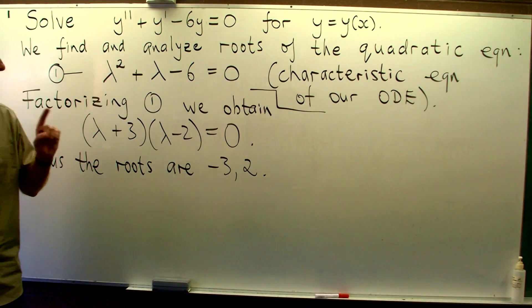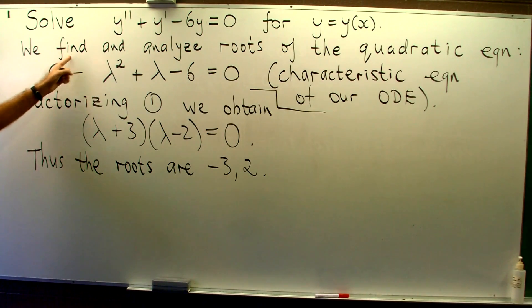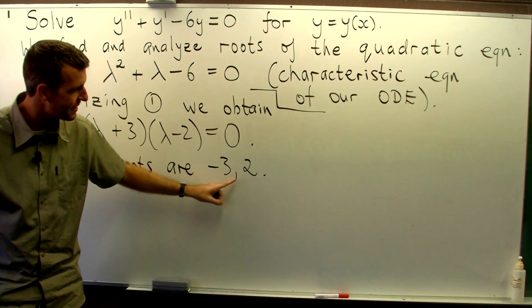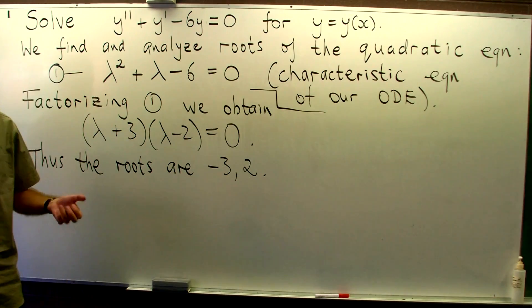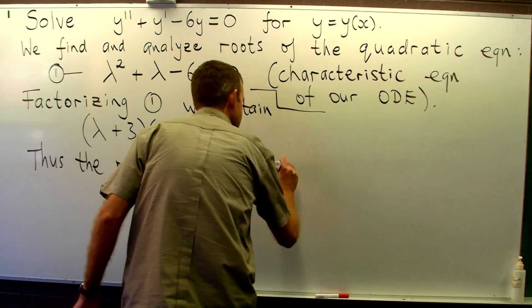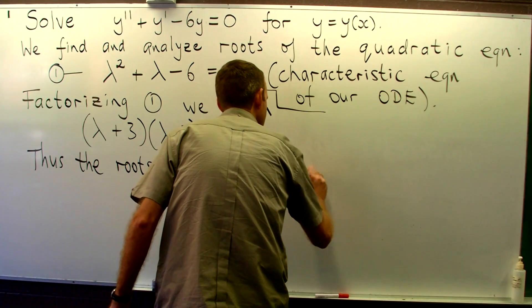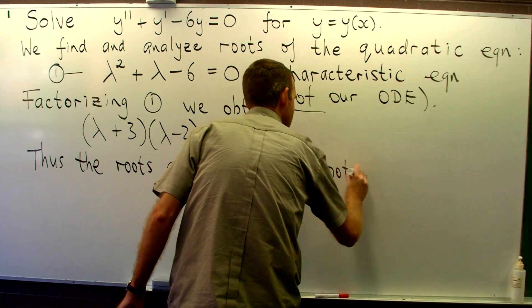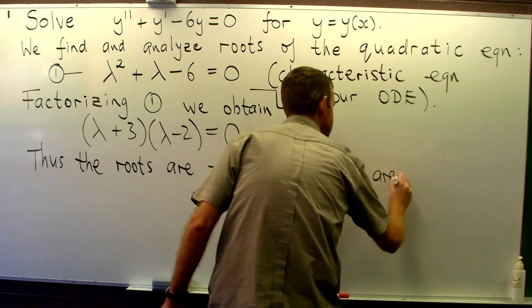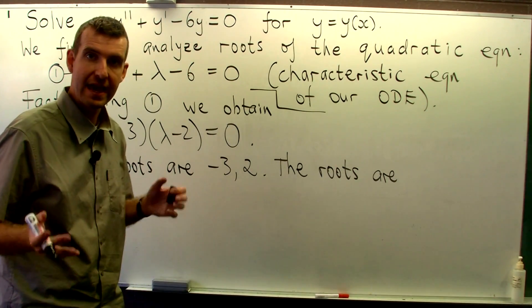Okay, so now we get to the second part. We've found the roots, now we analyse them. We see that they're both real numbers, and they're not equal to each other. So our roots are real and unequal.